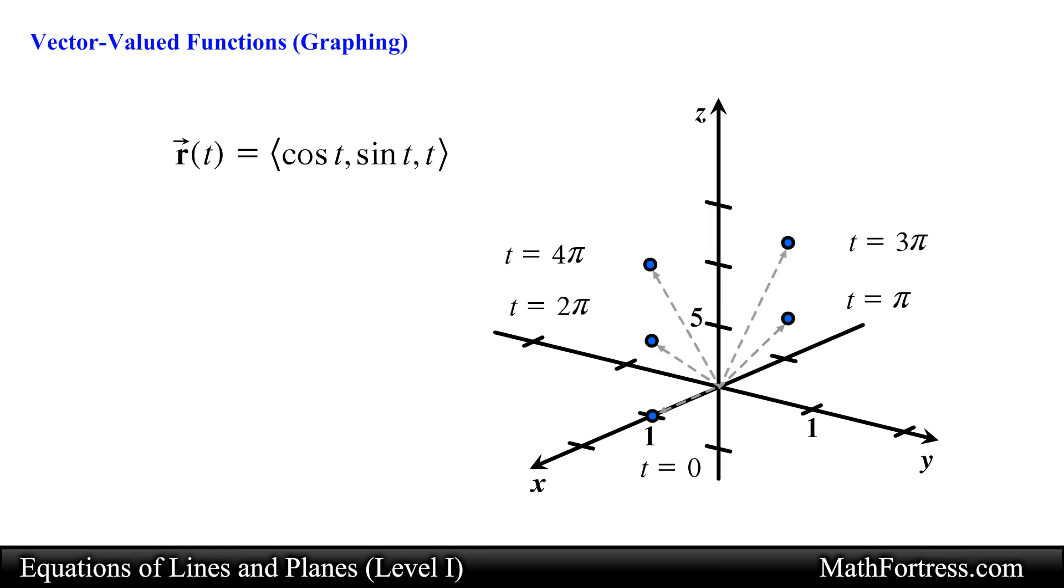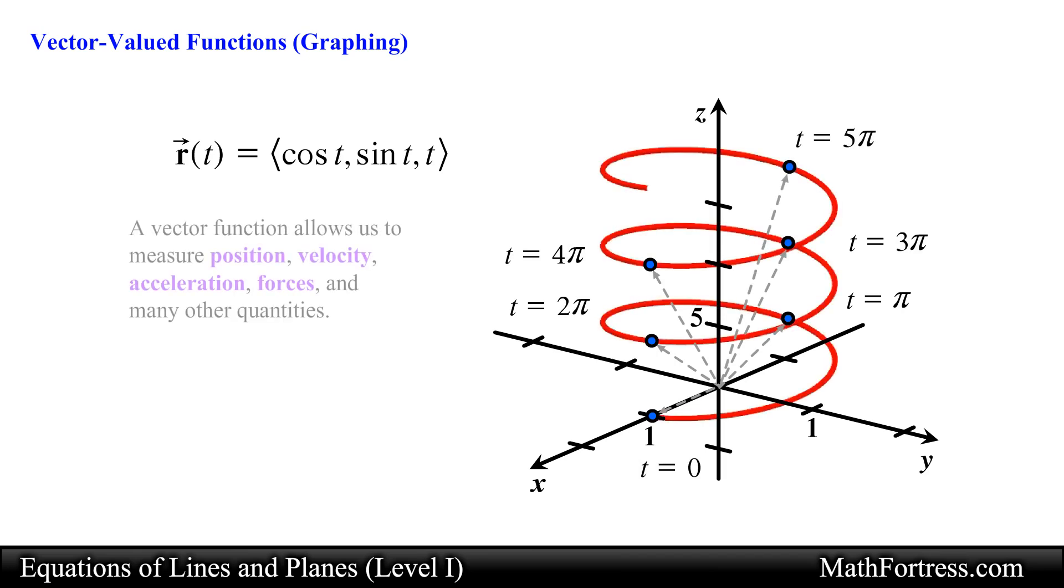a vector function in R cubed will generate 3 dimensional vectors in standard form for each value of t. The end point of each vector would trace a curve in space as t changes. A vector function allows us to measure position, velocity, acceleration, forces, and many other quantities.